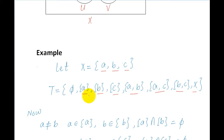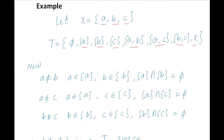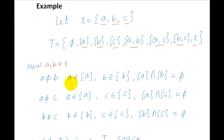We show that this topological space is a T2 space. First, for A not equal to B — A and B are two distinct elements — we have the singleton set {A}, which is open, and the singleton set {B}, which is open. A belongs to {A}, B belongs to {B}, and {A} intersection {B} is equal to the empty set.